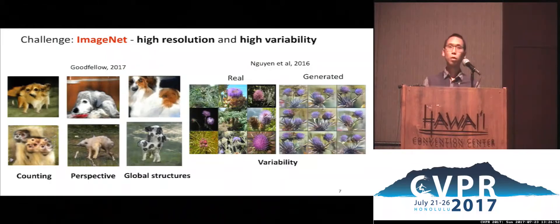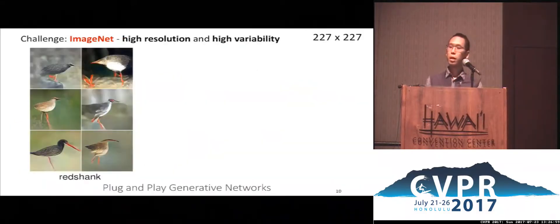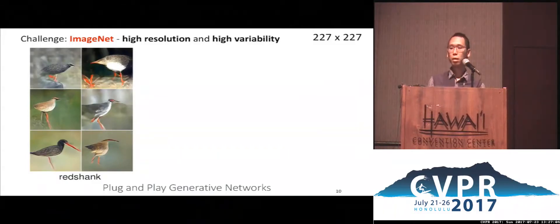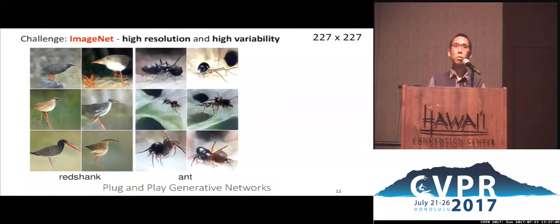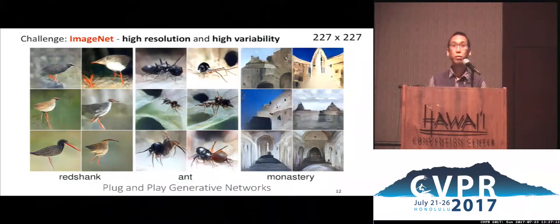In this work, we take a step towards solving this challenge by proposing plug-and-play generative networks. PPGN can generate high-quality, high-resolution images for 1,000 classes in a dataset with one single model — here Redshank, Ant, and Monastery. Note that these images are of size 227 by 227, which is considered high-resolution in generative models.